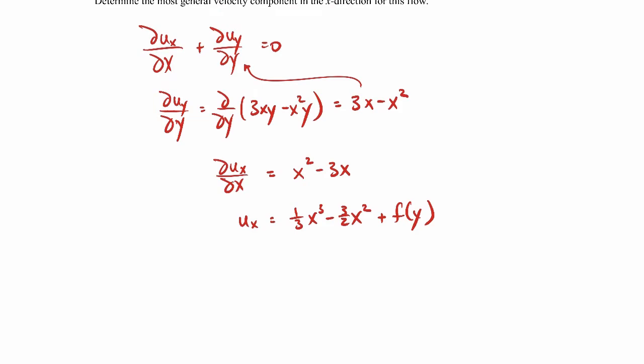I think everybody's familiar with when you integrate to get this kind of expression, there's a constant that usually shows up. And the reason the constant's there is because when you take the derivative of the constant, it goes to zero. It's the same idea here with this function of y. When I work backwards, if I do dux/dx of this expression, I'll get x² - 3x, and then I'll have this d/dx of function of y, which of course is just zero. So we get back the original term that we started with. So hopefully that makes sense to you.